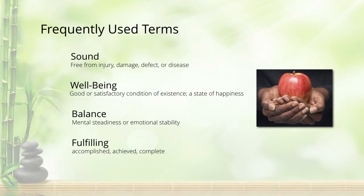Balance is a mental steadiness — recognizing different problems we're having, whether in our health and wellness, social wellness, or spiritual wellness, and understanding that we need to do something about them. Being fulfilled means we've accomplished something we personally set out to do — we've achieved a goal we've been working on. Understanding the technical use of these terms is important for how we approach the different dimensions of wellness.